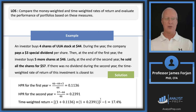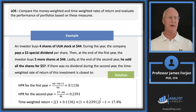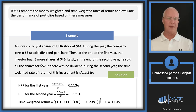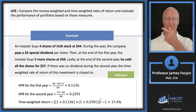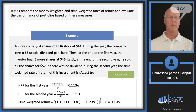Year-one holding period return: (46 − 44 + 3) / 44 = 11.36%. Year-two holding period return: (57 − 46) / 46 = 23.91%. Time-weighted return: (1 + 0.1136) × (1 + 0.2391), raised to the one-half power, minus one = 17.4%. Notice: in the time-weighted return, we don't care about the five extra shares the investor bought or the original four shares. When computing time-weighted returns, you just assume the investor holds one share of stock.